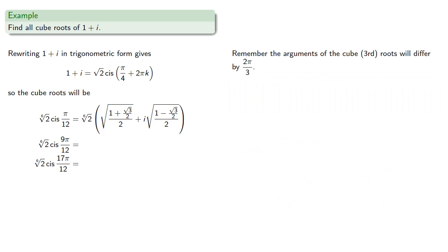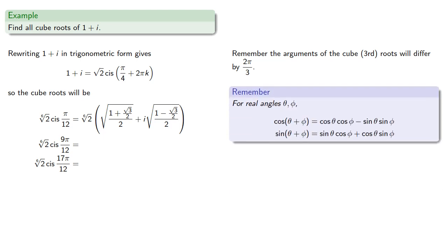For the others remember the arguments of the cube root differ by 2π/3, and we have our angle sum and difference formulas.